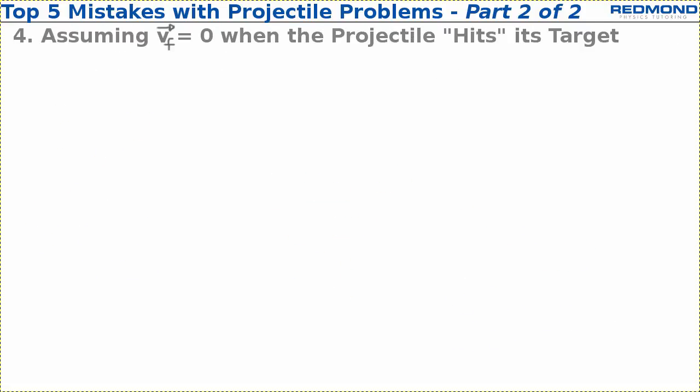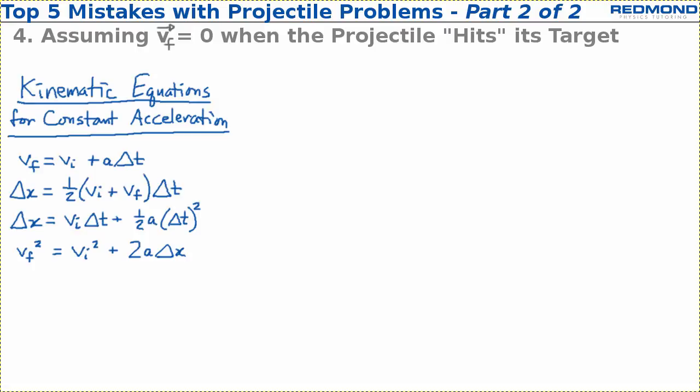The fourth mistake is assuming that the final velocity is zero when the projectile hits its target. When solving projectile problems, we use the kinematic equations for constant acceleration a lot. And one key aspect to them is that these equations are only valid for constant acceleration.